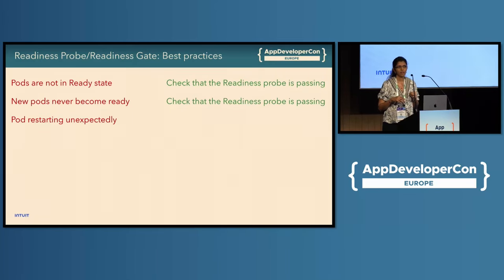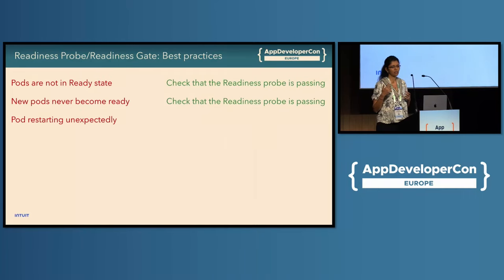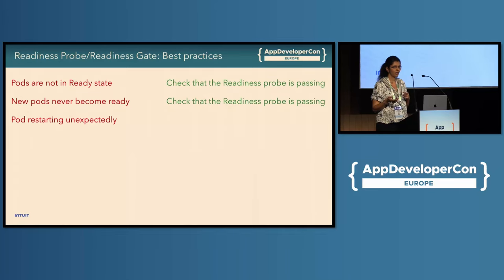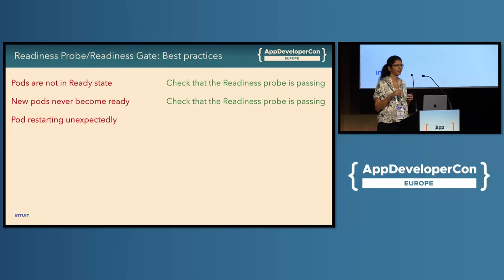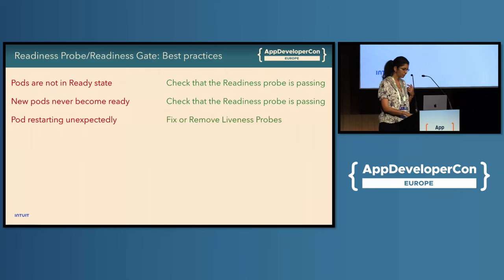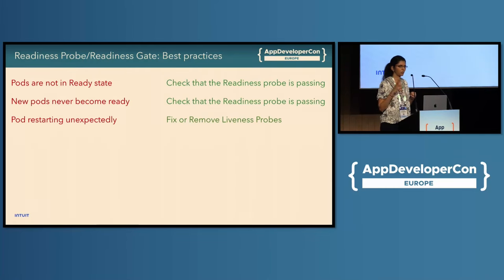If pods are restarting unexpectedly, this is where liveness probes matter. Liveness probes are different from readiness probes — liveness probes check that your pods are alive, and if Kubelet determines a pod is not alive, it will restart the pod. Readiness probes, by contrast, simply isolate the pod and take it out of rotation until it becomes ready again. At Intuit, we've seen developers use the same probe for both liveness and readiness without understanding the difference, and end up shooting themselves in the foot. Our recommendation is to remove the liveness probe and have better checks to ensure your pod is working well.